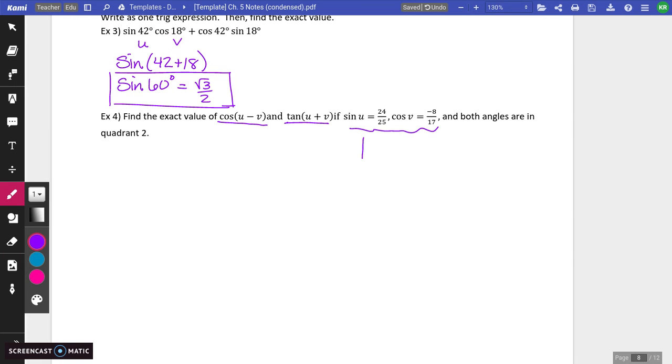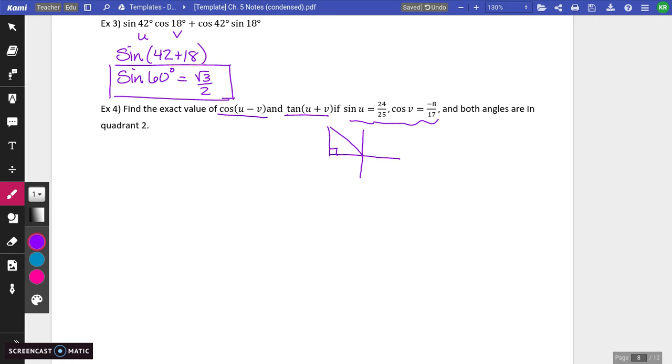All right, so for this first one, sine of u is 24 over 25. So second quadrant angles, remember sine SOH CAH TOA. So sine is opposite over hypotenuse. So the opposite side is going to be 24, your hypotenuse is 25.